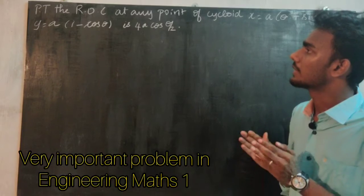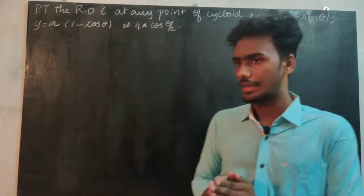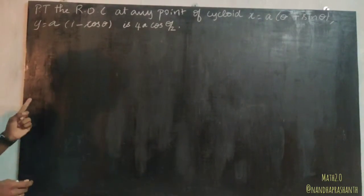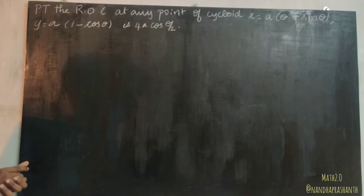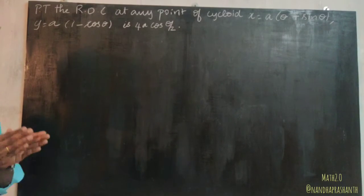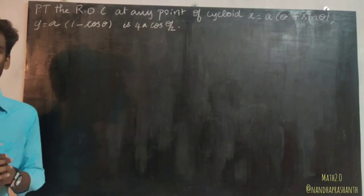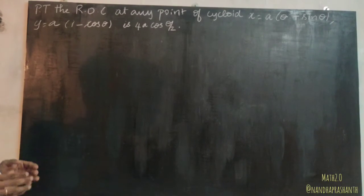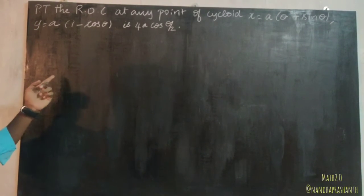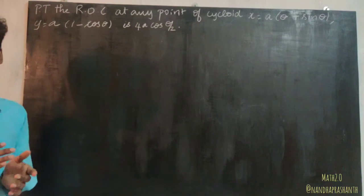We have to prove that the radius of curvature at any point of the cycloid x = a(θ + sinθ) and y = a(1 - cosθ) is equal to 4a·cos(θ/2). We have to prove this using the parametric coordinates of the cycloid.